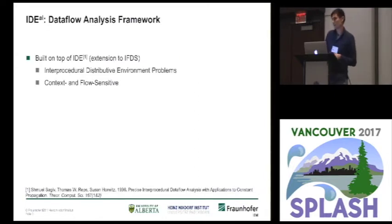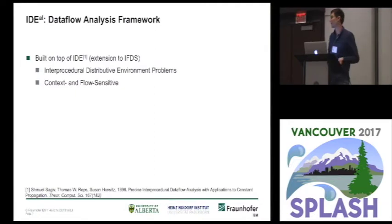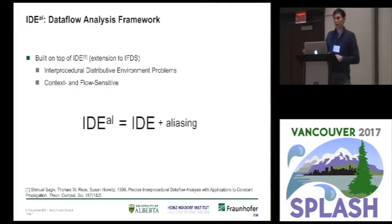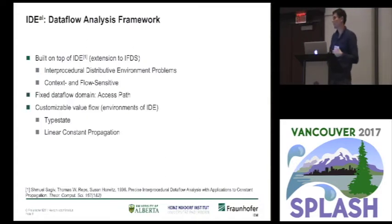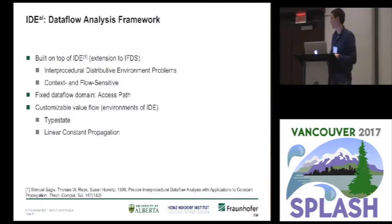That is exactly what motivated us to design IDEAL, where we only want to propagate individual access paths — not sets of access paths, but individual ones. IDEAL is built on top of IDE, which is a data flow algorithm based on graph reachability that propagates what are called environments. IDE stands for Interprocedural Distributive Environment Problems, and it supports context and flow sensitivity. Because it's based on IDE and we extended IDE with aliasing, we call the framework IDEAL. You fix the data flow domain to be access paths, but what you can customize are the value environments propagated along these access paths. One example application is a type state analysis; another is linear constant propagation.